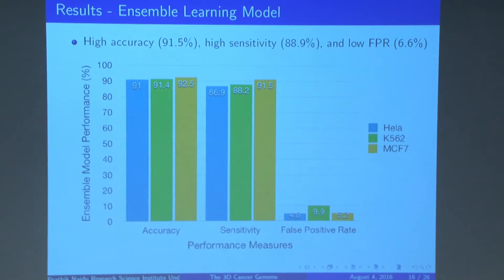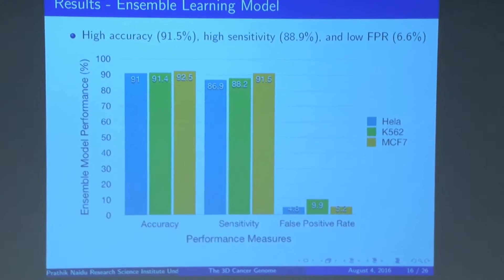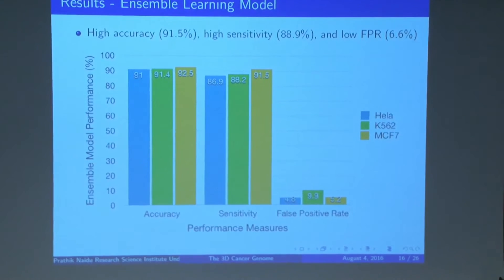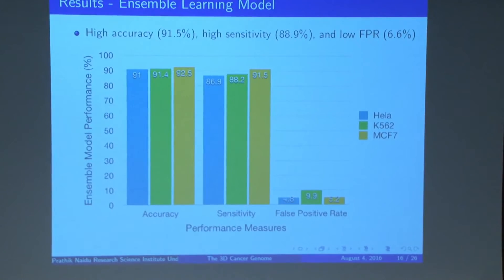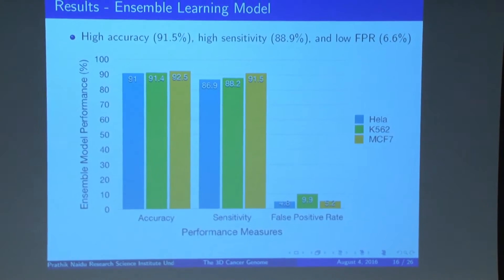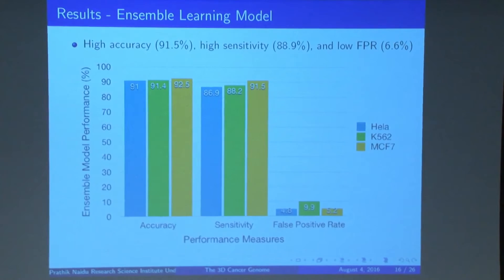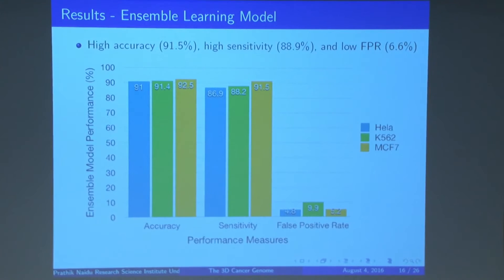We found that the ensemble model had a high accuracy of 91.5%. But accuracy doesn't tell us the entire picture. We wanted to ensure that across our entire genome, our machine learning models were able to identify and be very sensitive to predicting these loops. And we found a very high sensitivity of 88.9% while maintaining a low false positive rate.